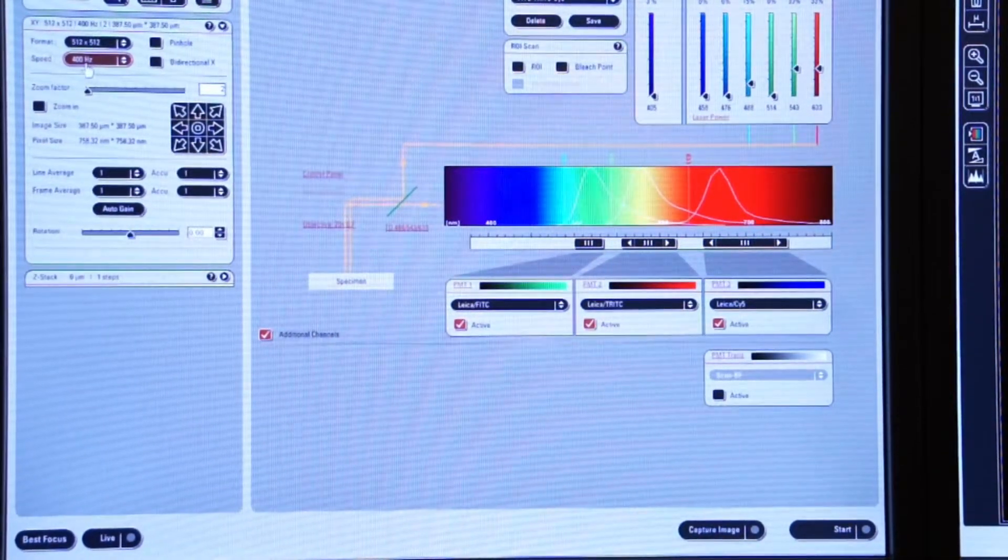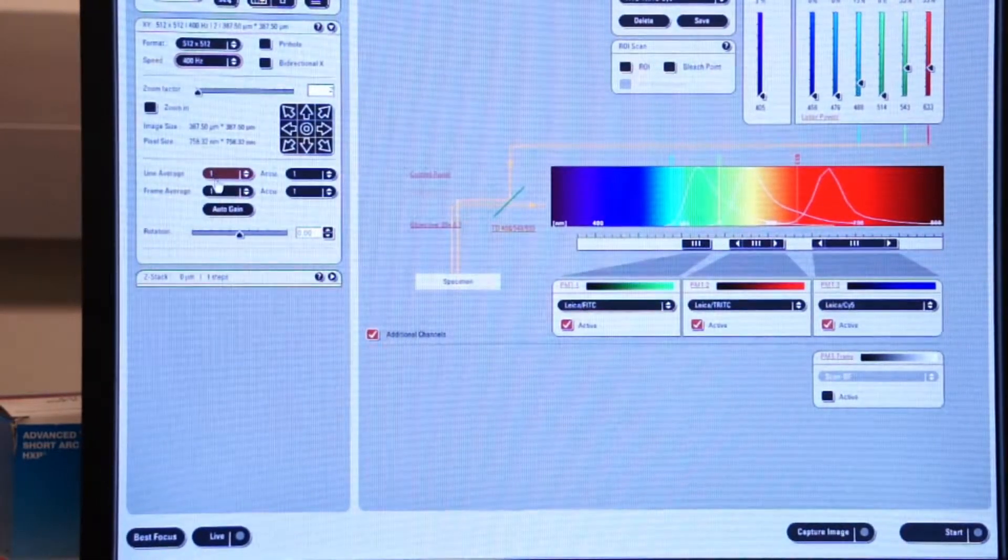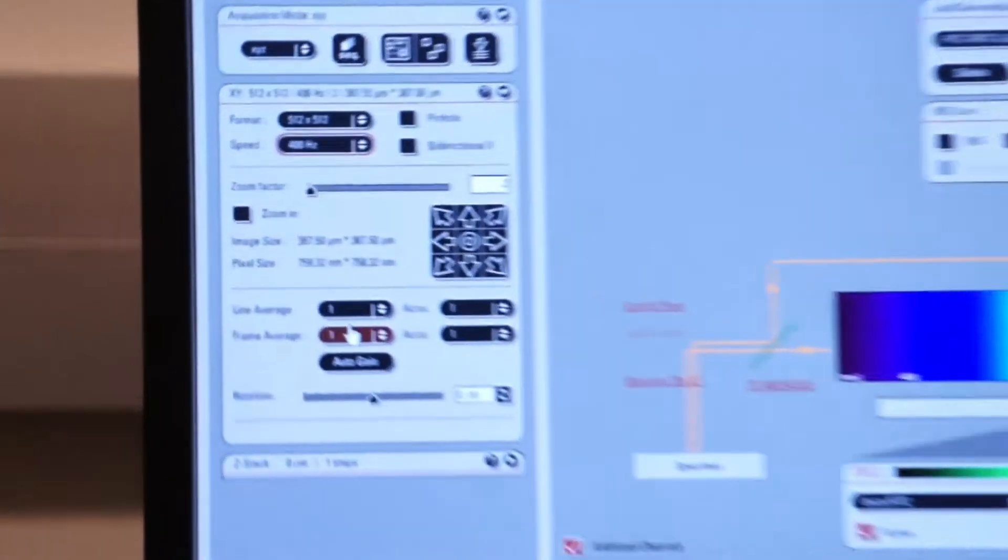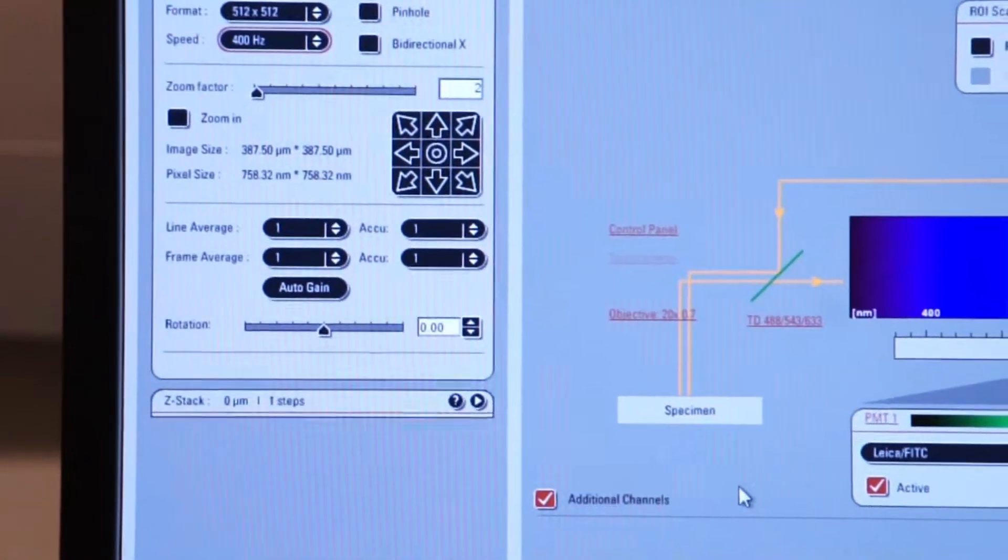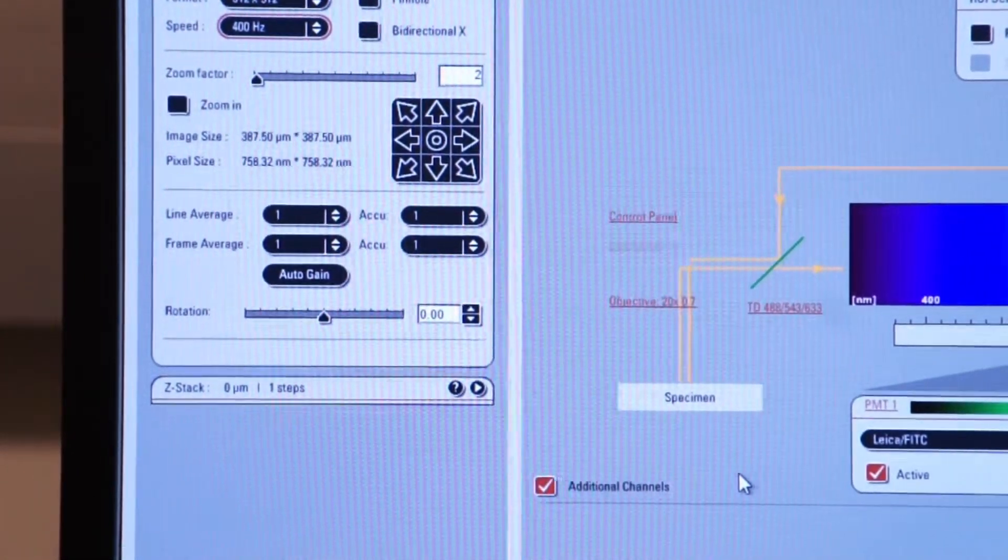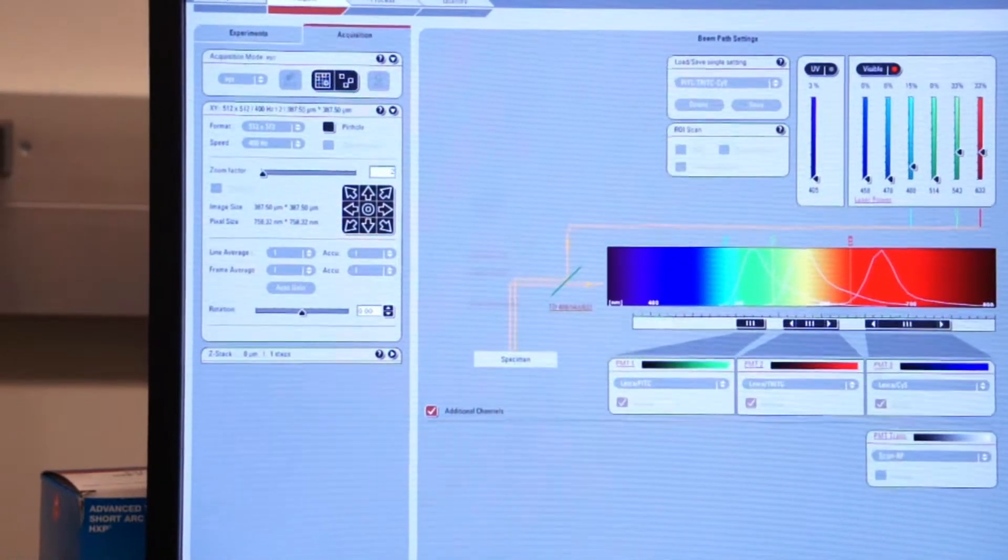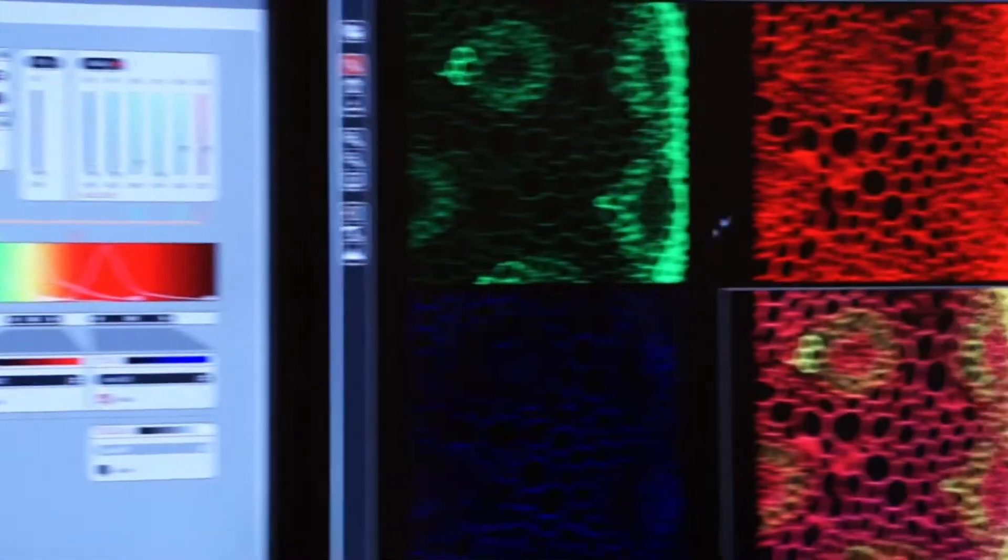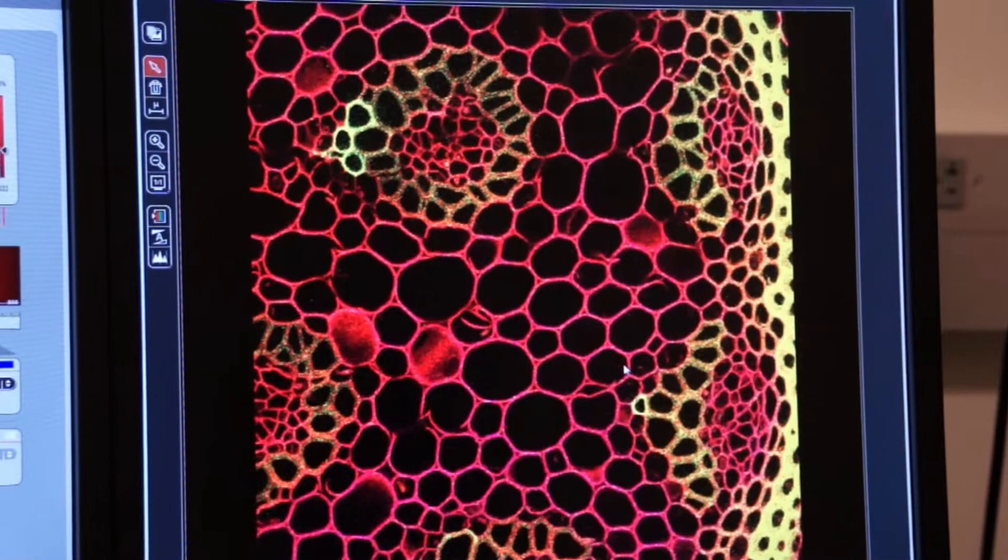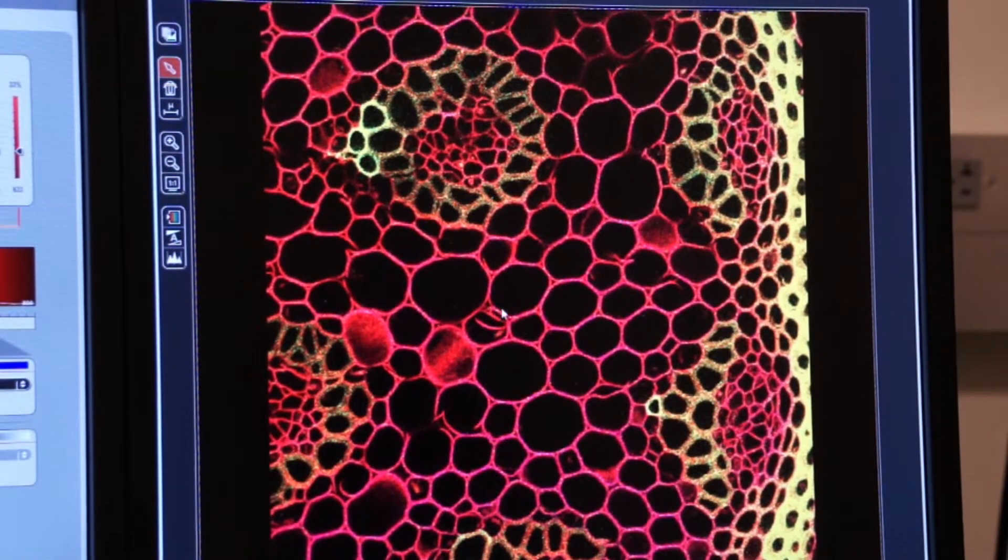Our speed is at 400 Hertz and we have not engaged any line or frame averaging. We'll go down and click on capture an image and let's capture an image of our specimen. Here you see all three of our fluorophores and our composite image.